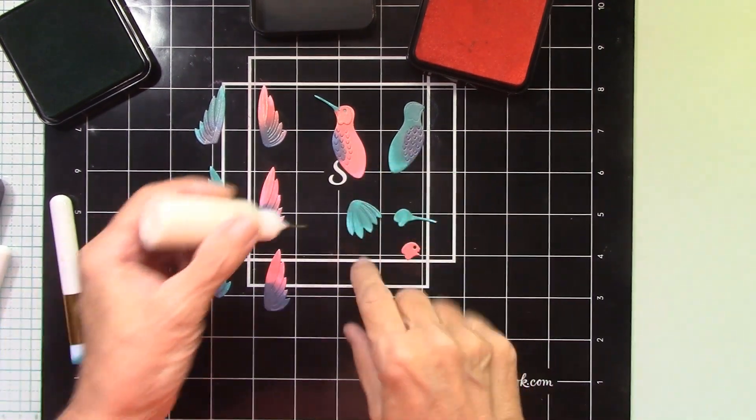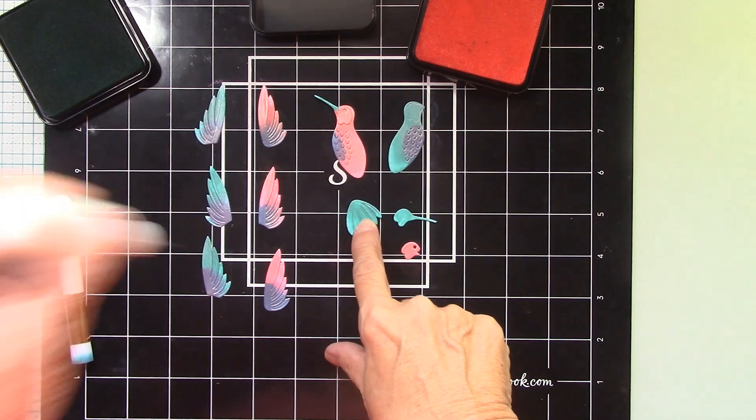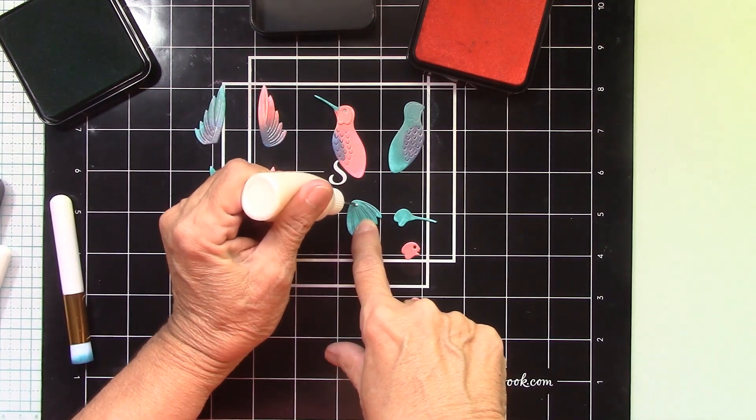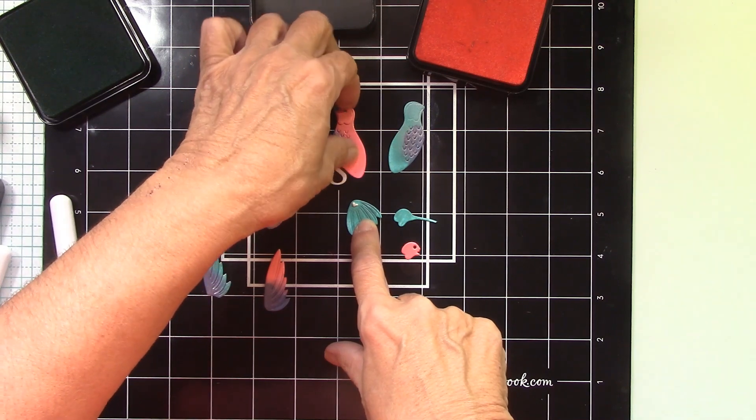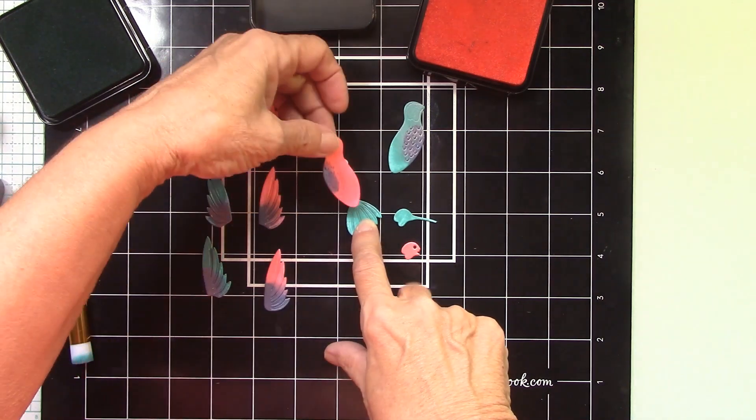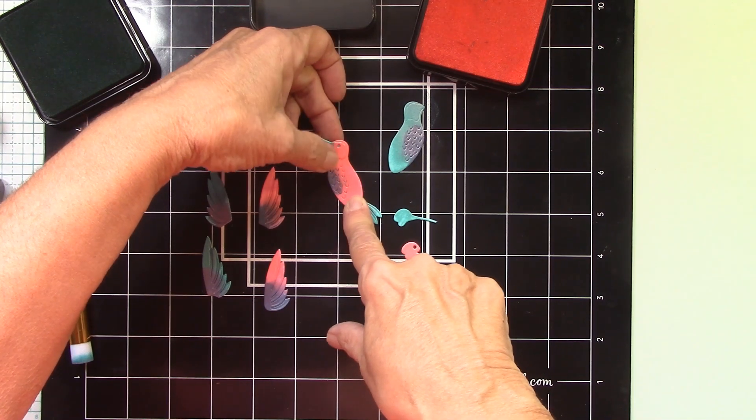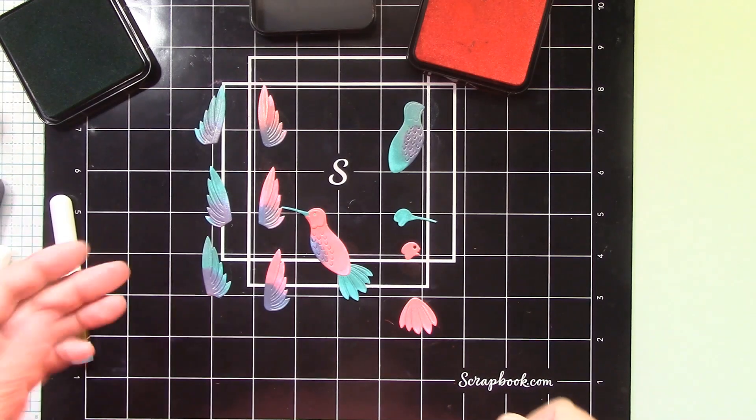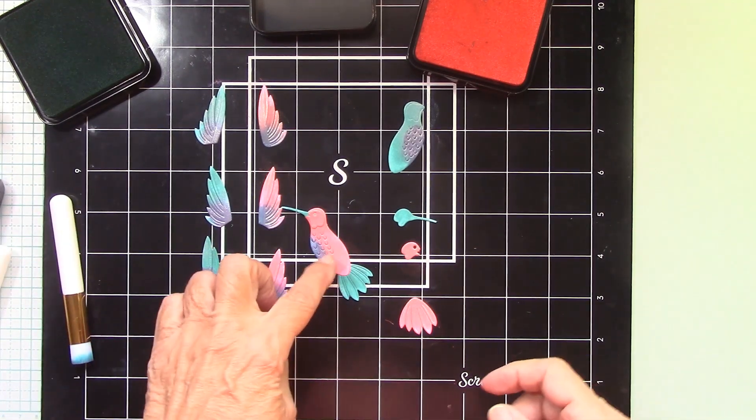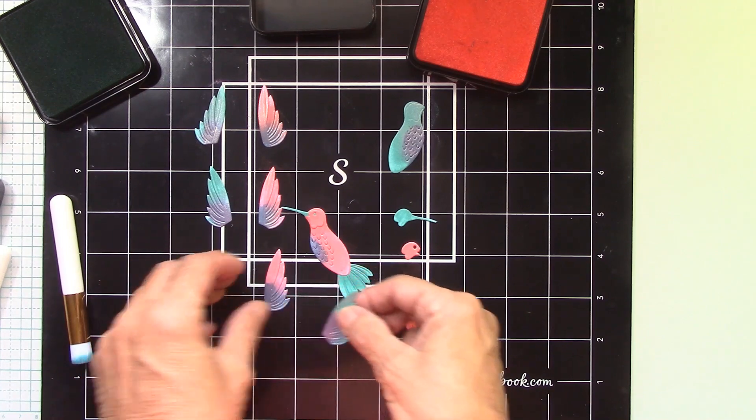So we just kind of go through and put it together. Okay. We'll get the tail on here. Put a little glue. Sorry, I had to take a little break there. I got a phone call from a friend. Put that one right there. And you know something about this is like every time you do it, it's going to be different, which is fun.